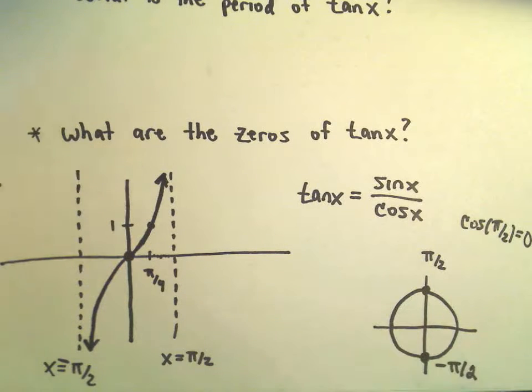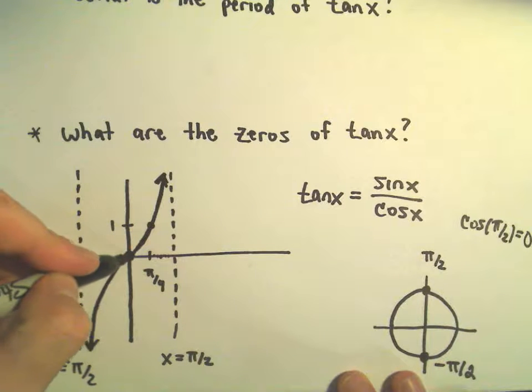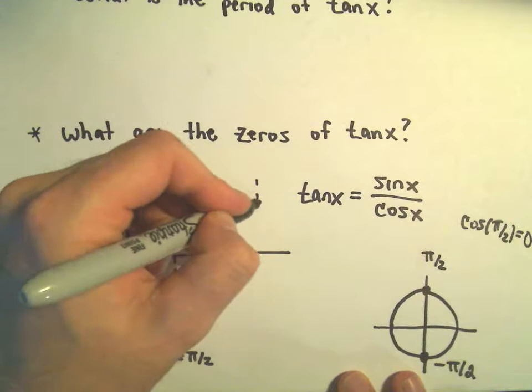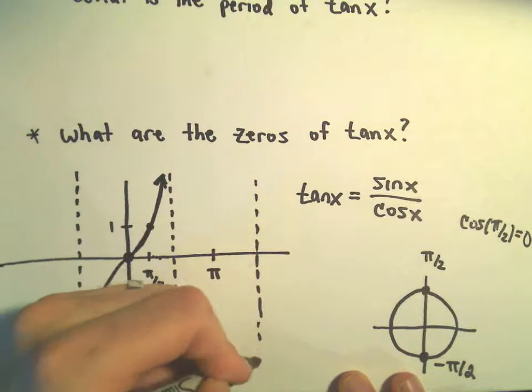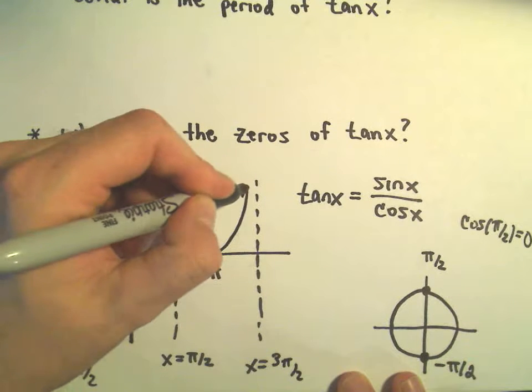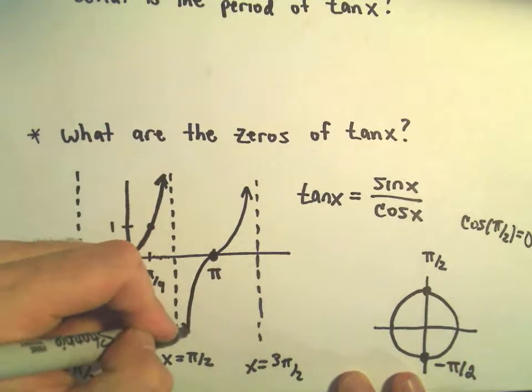It keeps repeating itself. If you think about this, here's 0, π over 2. This would be π. The next asymptote would be at 3π over 2. The graph of tangent repeats itself.